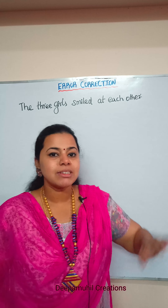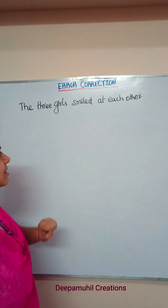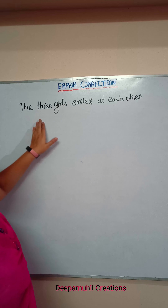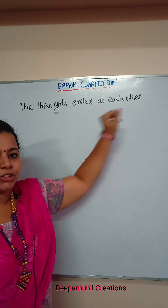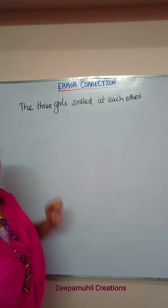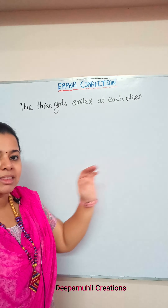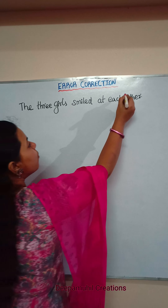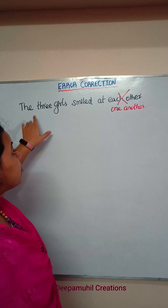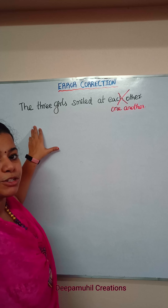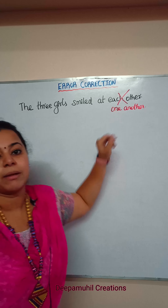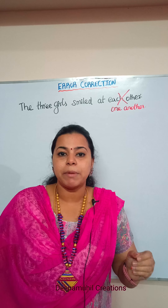Hi, welcome to Deepa Mewheel Creations. In this lesson, you should learn about 'each other' and 'one another.' The three girls smiled at each other. This is a sentence using 'each other.' The three girls have been mentioned, and here 'one another' can also be used.